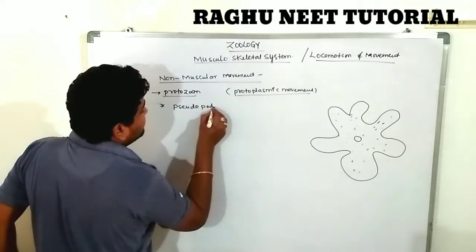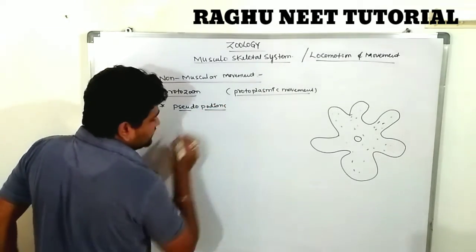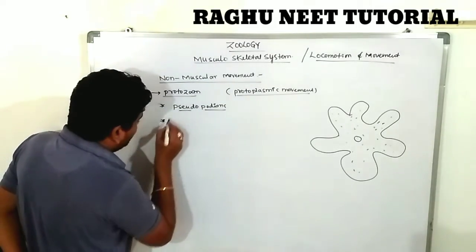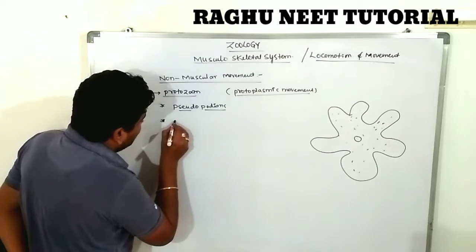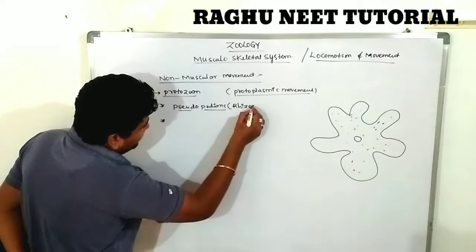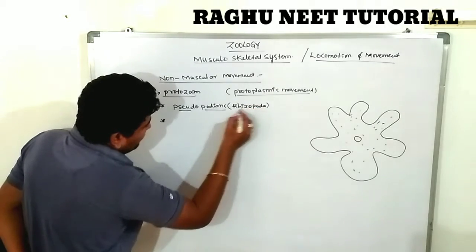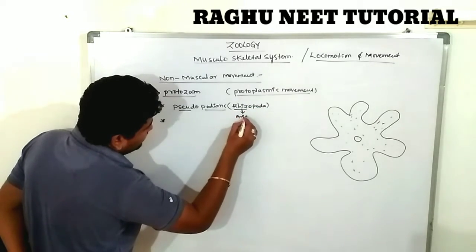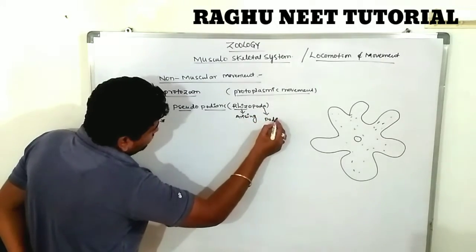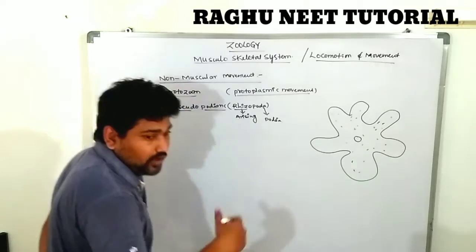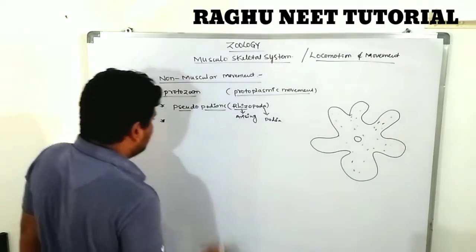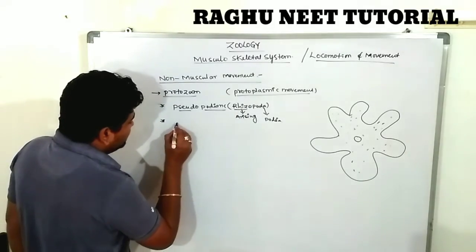Pseudopodia means false podium — the organism shows false-podium movement. This group is commonly known as Rhizopoda. Rhiza means arising, poda means leg — the arising of the podium from inside to outside of the body through the cytoplasmic region. This is known as pseudopodia.